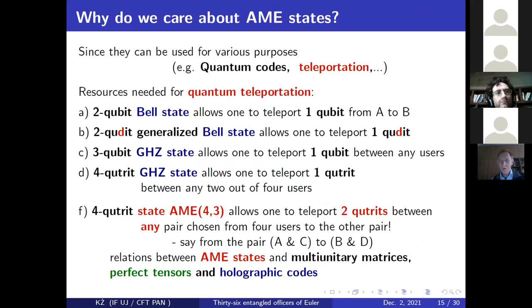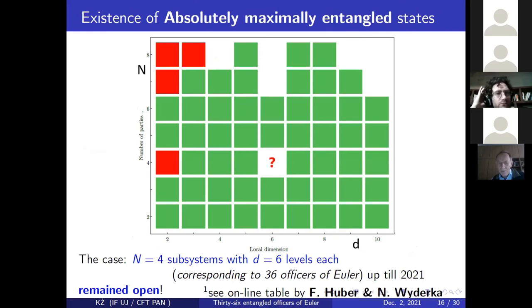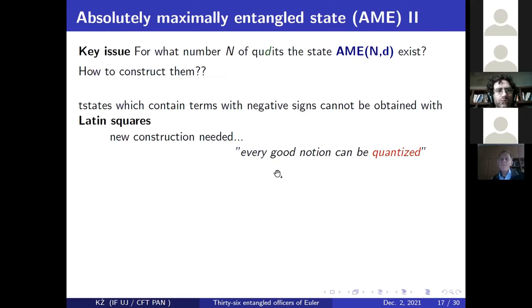So now why do we care about those AME states? Because of different applications like quantum codes, teleportations, and things like this. And then there was a paper, even a table online, by Huber and Wyderka. So here are different local dimension and different number of parties. So basically, green means such states exist, red it doesn't exist. So here, this question mark corresponds to local dimension six, and local number of parties four, so four quhexes. So this was the open case a year ago. So the key issue is whether such strange states exist.